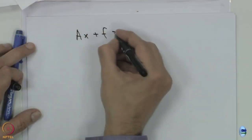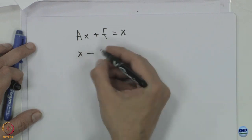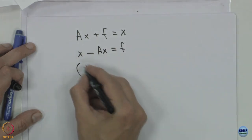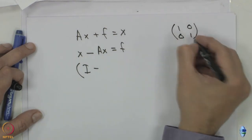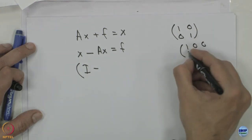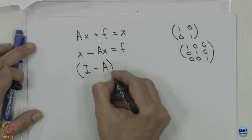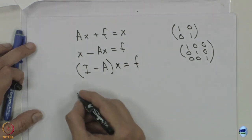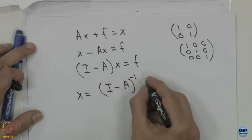So essentially what we had is: we started off with Ax plus f equals x, so x minus Ax equals f. This x uses the identity matrix. The identity matrix for a 2x2 is [1 0; 0 1], and for 3x3 it is [1 0 0; 0 1 0; 0 0 1]. This gives us (I minus A) times x equals f, and so x equals (I minus A) inverse times f.